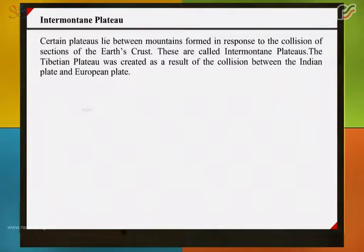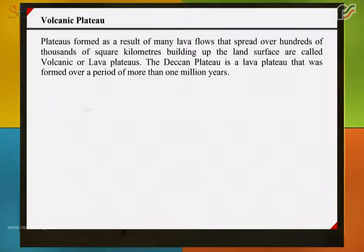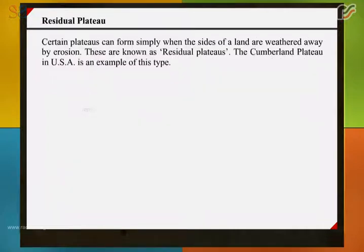Certain plateaus lie between mountains formed in response to the collision of sections of the earth's crust — these are called intermontane plateaus. The Tibetan plateau was created as a result of the collision between the Indian plate and the Eurasian plate. Plateaus formed as a result of many lava flows spreading over hundreds of thousands of square kilometers are called volcanic or lava plateaus. The Deccan plateau is a lava plateau formed over a period of more than one million years.